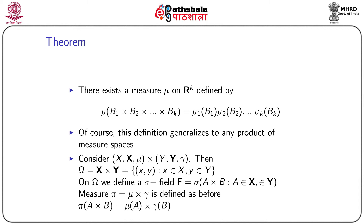On Ω = X × Y we can define a sigma field script-F generated by {A × B : A ∈ script-X, B ∈ script-Y}, and we define a product measure π = μ × γ by π(A × B) = μ(A) · γ(B). This is the measure defined on this sigma field.